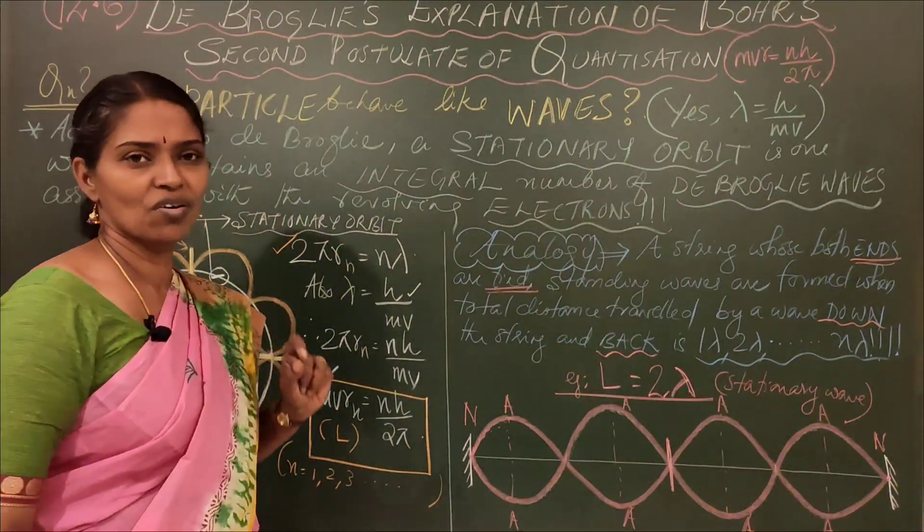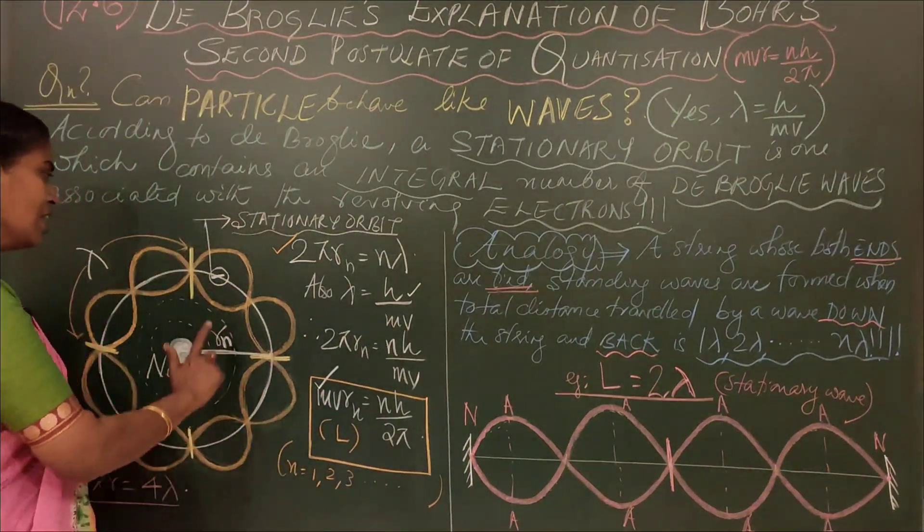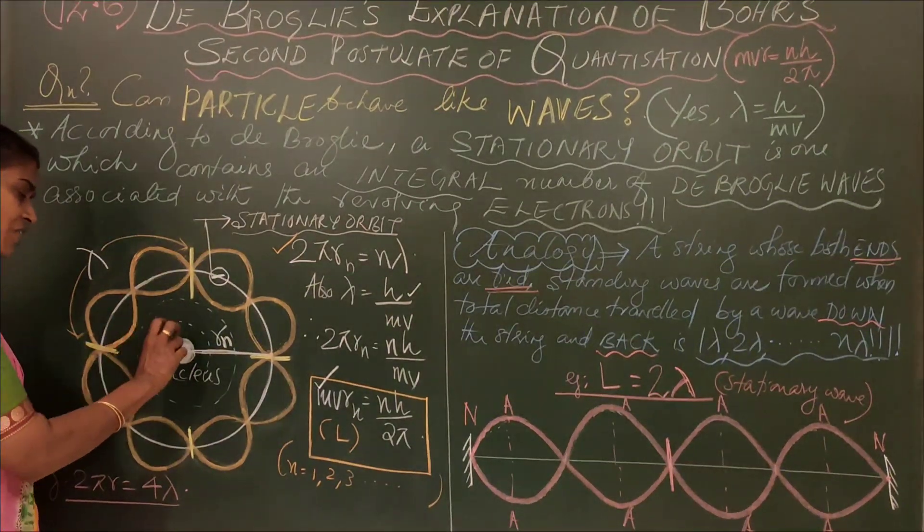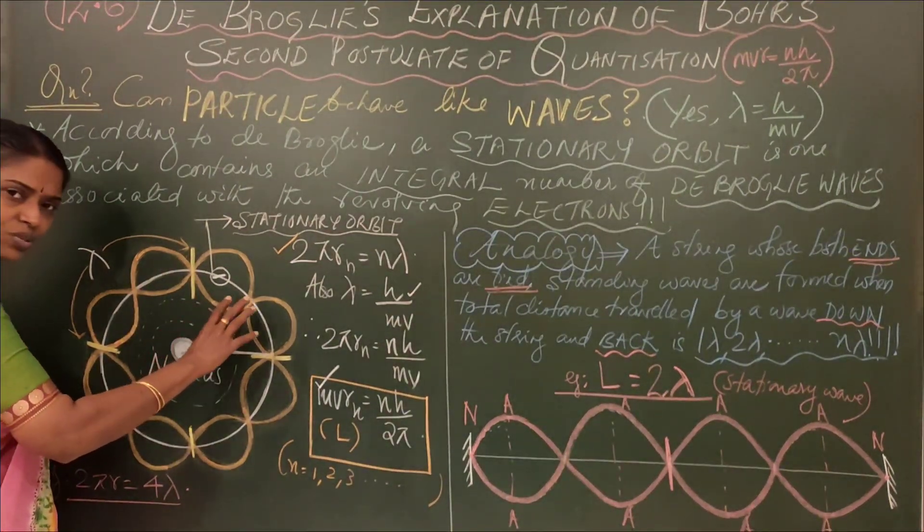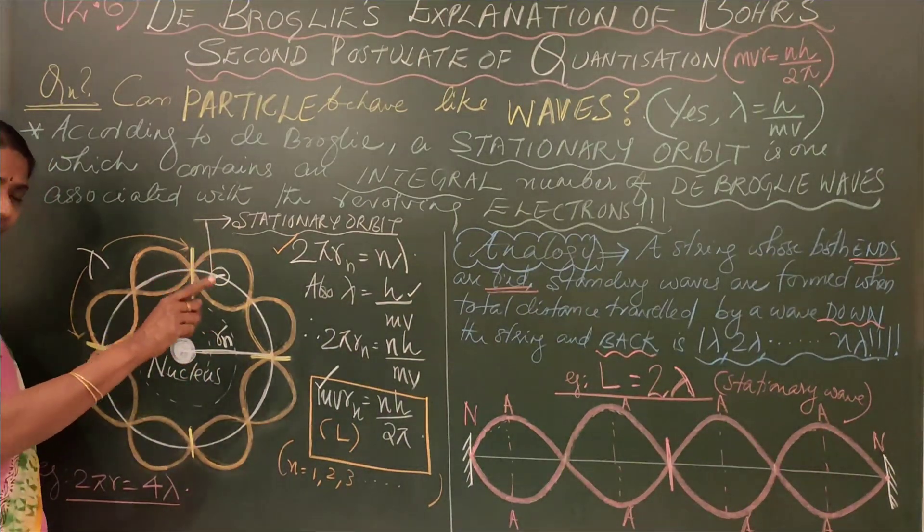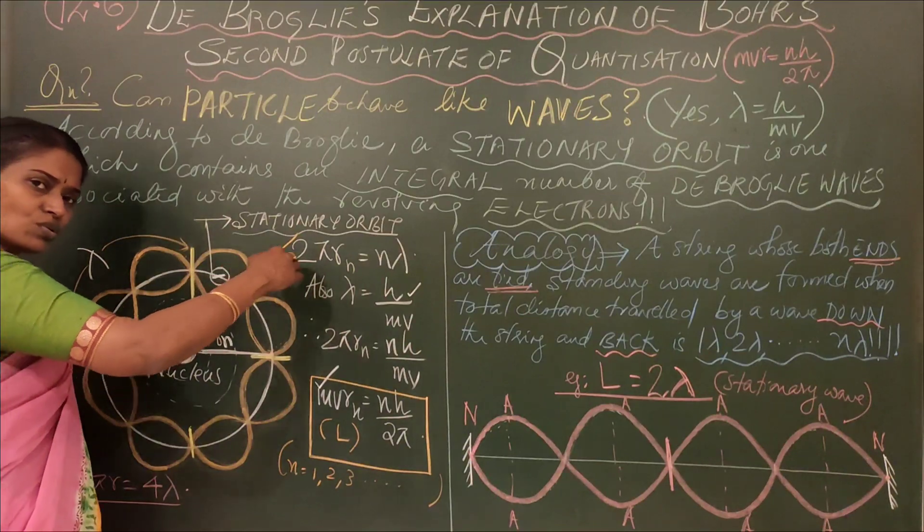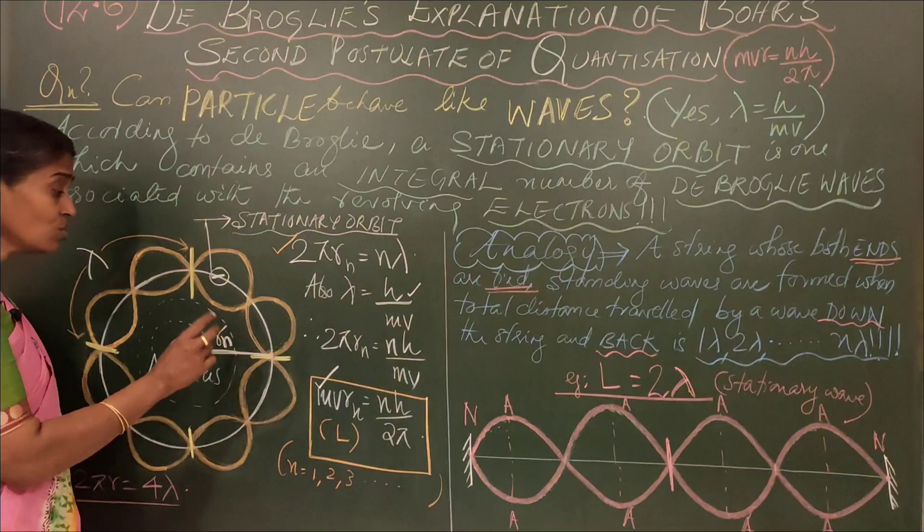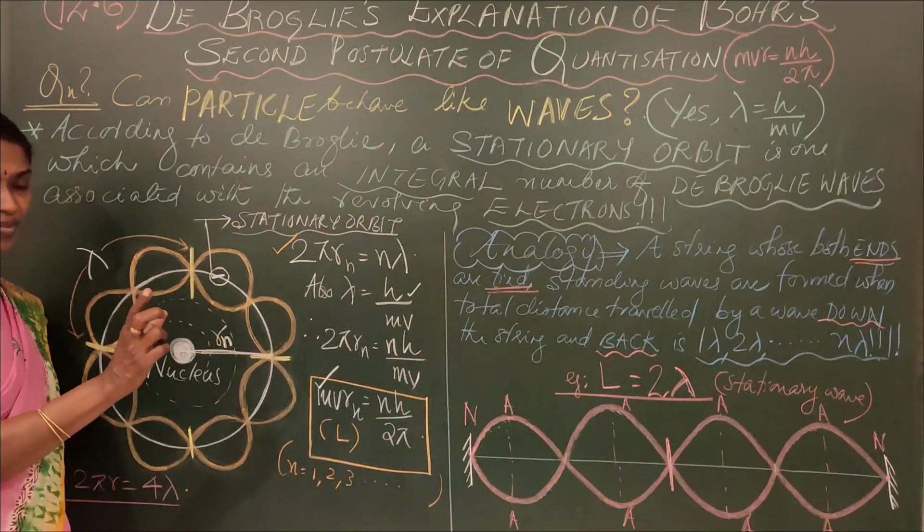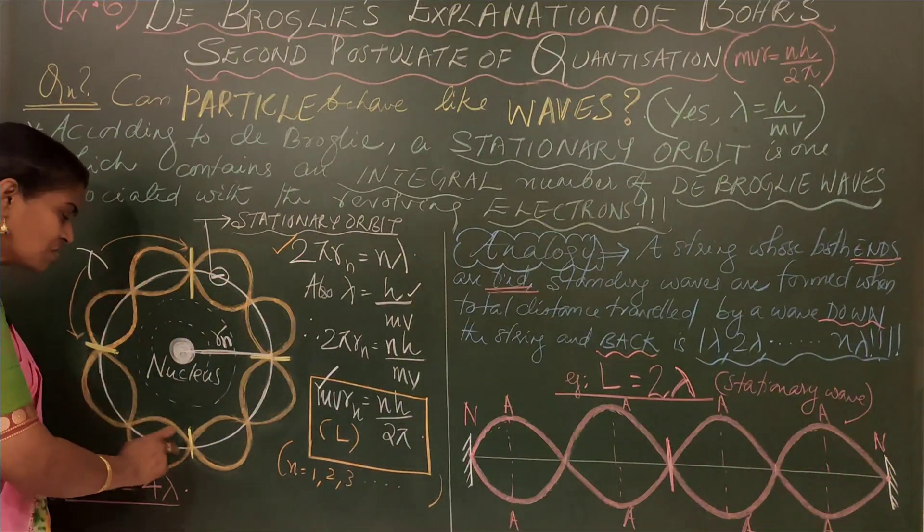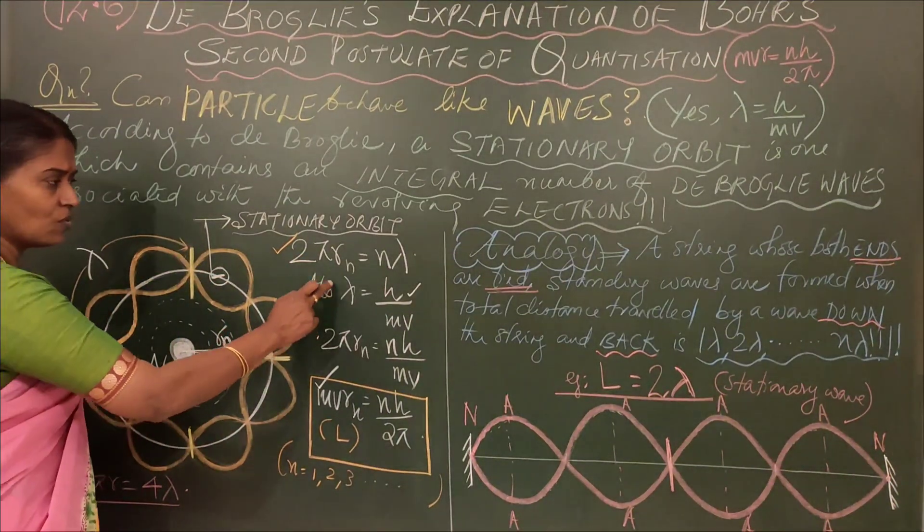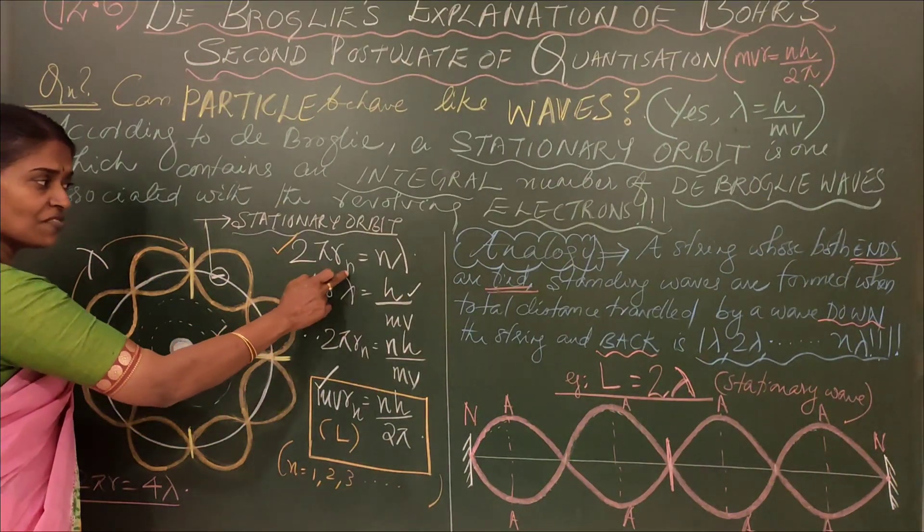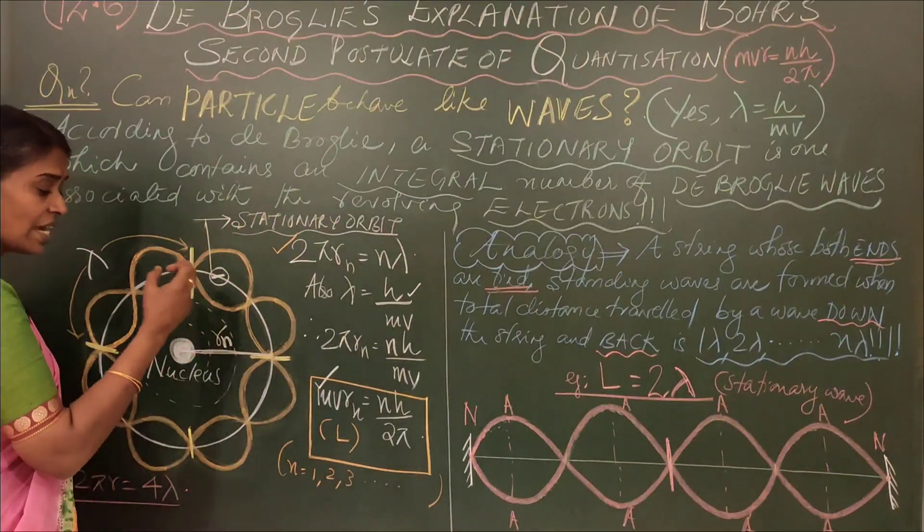This is the electron revolving around the nucleus. From the nucleus you have radius expanding. You have a number of radii: n=1, n=2, and so on. Suppose this is an orbit whose radius is rn. What will be the length of this curve? For sure it is 2πrn.